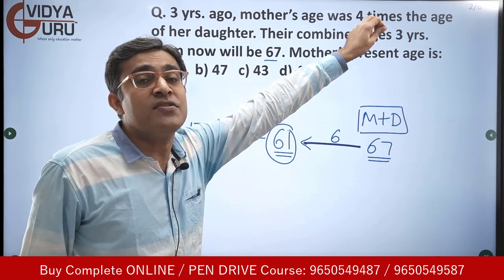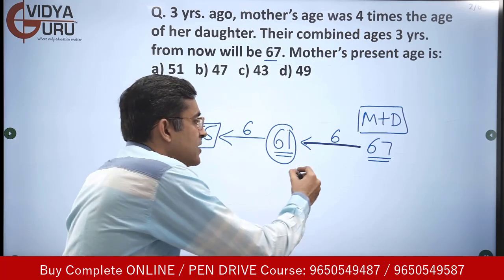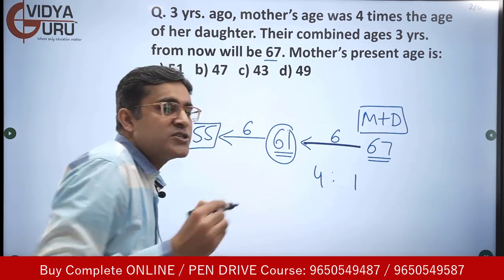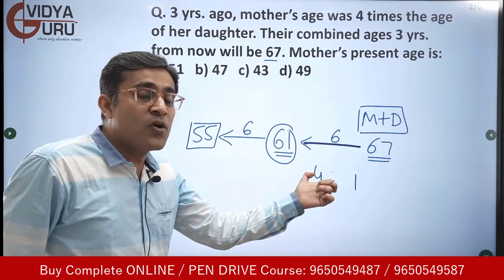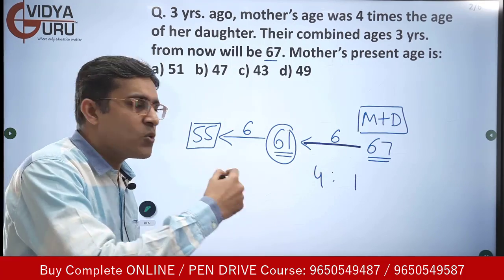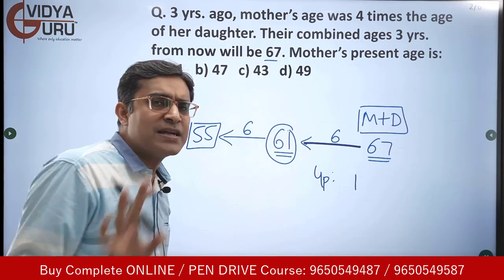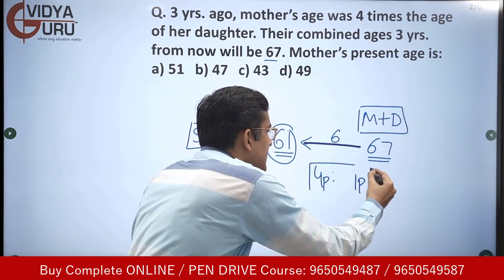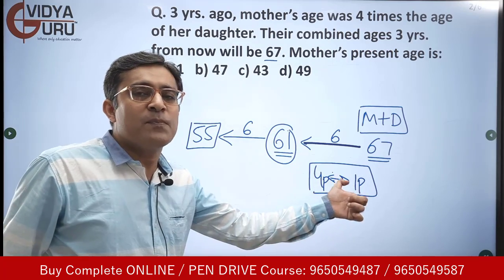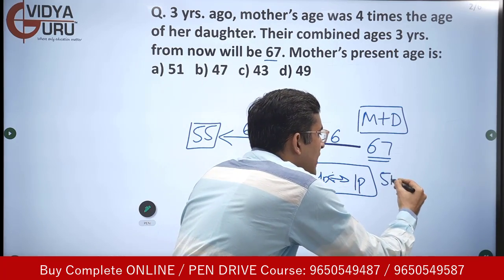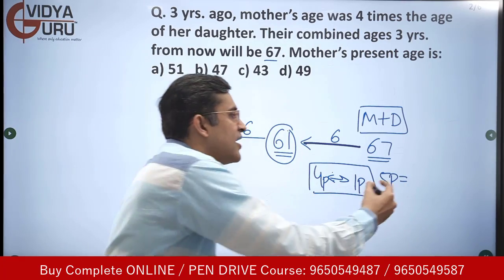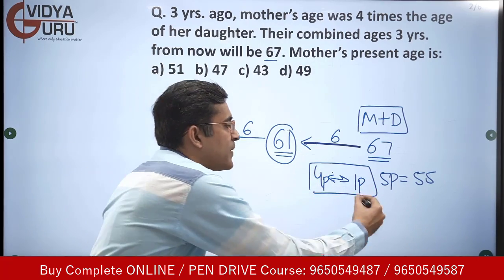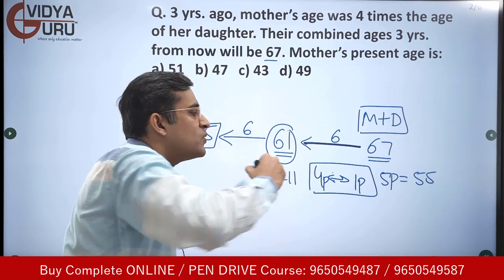That is where we have been given the ratio. Three years ago, mother was four times the daughter's age, so the ratio was 4:1. The sum of their ages was 55. Four parts plus one part gives five parts. Five parts equals 55, so one part equals 11.